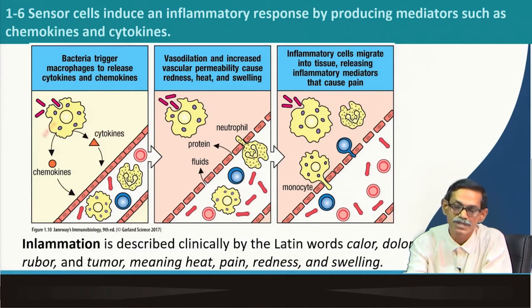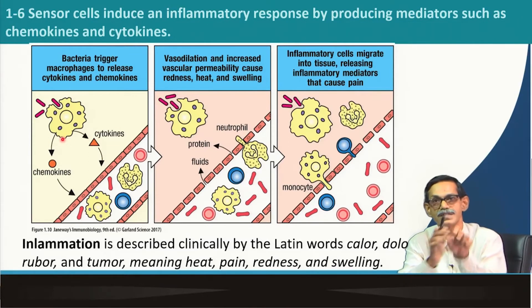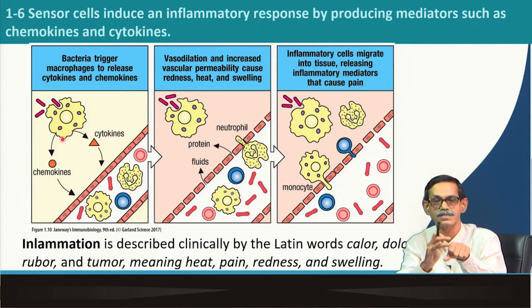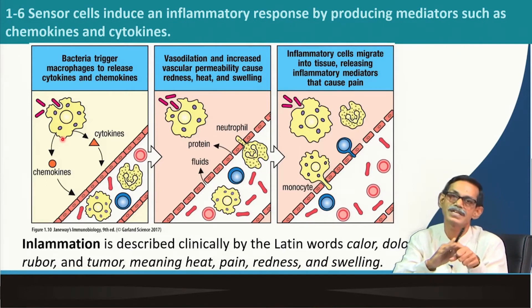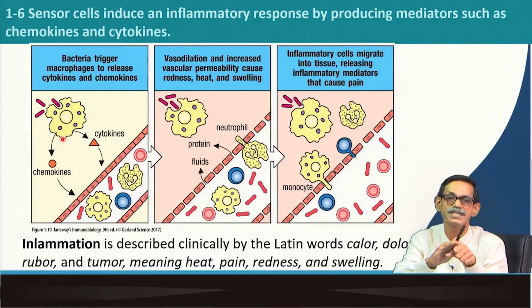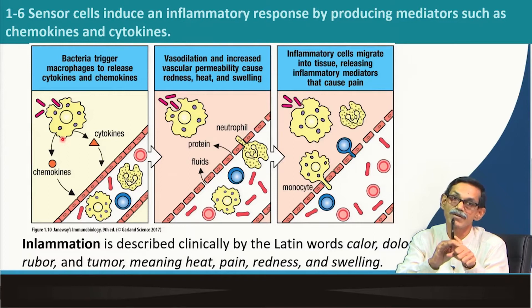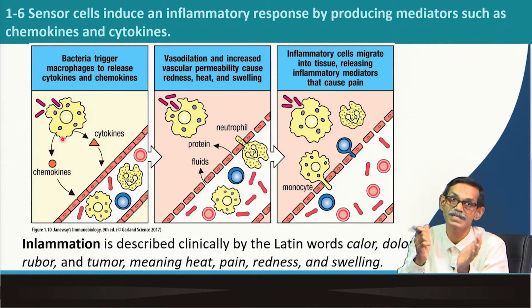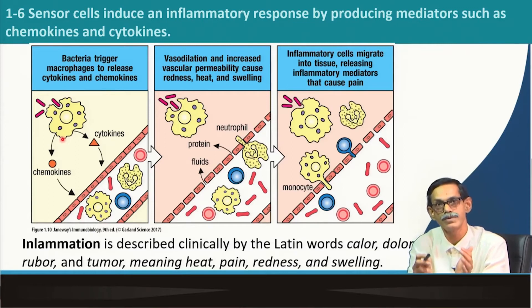Activated macrophage produces some molecules — cytokines and chemokines. Chemokines are chemicals that attract cells by chemotactic activity, meaning they attract other cells to the particular site of infection. Suppose this yellow part is the tissue, and there is a bacterial infection — say a cut in the hand, or a nail injury, causing tissue damage and bacterial infection. Macrophages and dendritic cells are present there. The macrophage sees the bacteria, recognizes them, eats them, becomes activated, and then produces cytokines and chemokines.